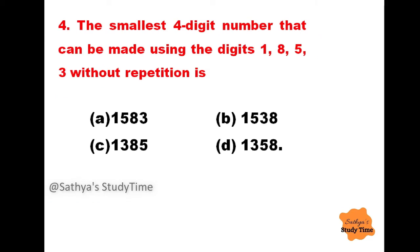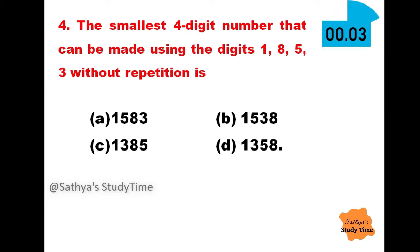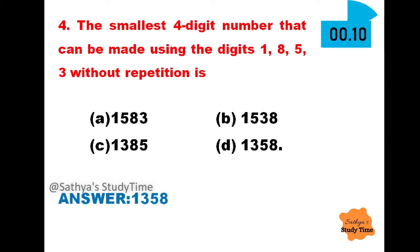Question 4: The smallest four-digit number that can be made using the digits 1, 8, 5, 3 without repetition is. Your time starts now. The answer is 1358.